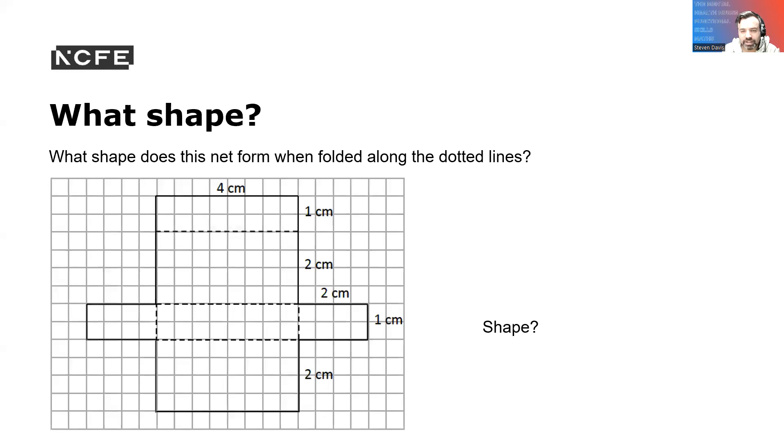What shape does this net form when it's folded along the dotted line? That would be a cuboid. Because you can bring that up, bring that up, bring the sides up, and that would make a nice cuboid box.